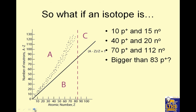What if an isotope has 10 protons and 15 neutrons? It would be stable. What if it has 40 protons and 20 neutrons? It would be radioactive — it's off the band of stability. What if it had 70 protons and 112 neutrons? Stable. And bigger than 83 protons, it is radioactive by alpha decay. So it has to do alpha if it's bigger than 83 — all of those atoms in that region do alpha decay.